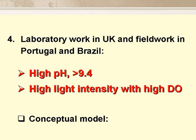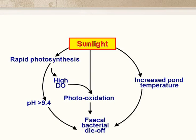In lab studies here in Leeds, and in field work in Portugal and Brazil, we found two main factors responsible for faecal bacterial die-off in ponds. Firstly, high pH — values above 9.4 are rapidly lethal to all faecal bacteria, with the exception of Vibrio cholerae, which tolerates high pH quite well; so it's fortunate that it's killed off quickly by sulphides in anaerobic ponds. And secondly, the combination of high dissolved oxygen and high visible light intensity. This is the conceptual model we developed for faecal bacterial removal in facultative and maturation ponds — but remember it doesn't apply to Vibrio cholerae.